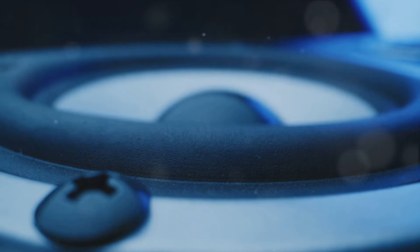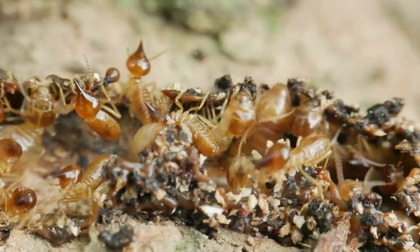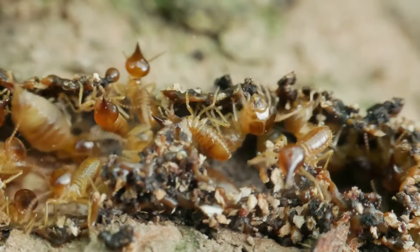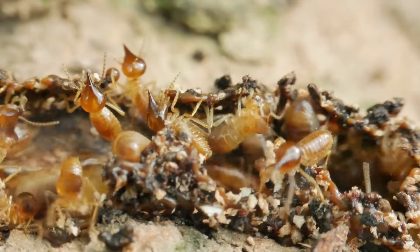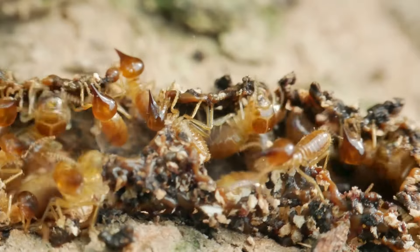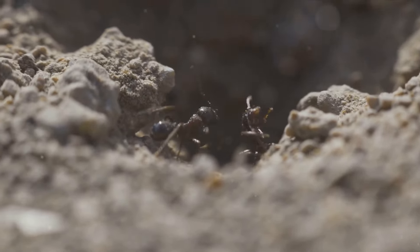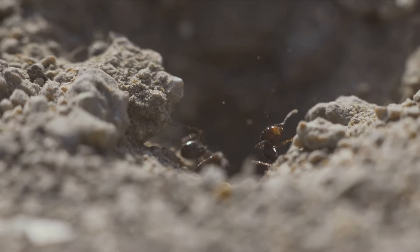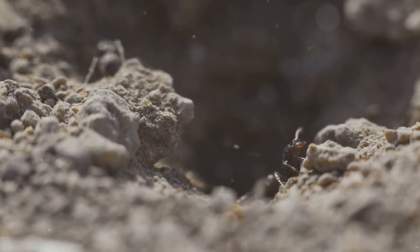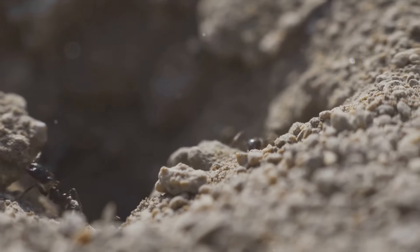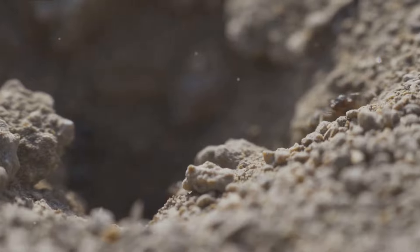Let's take the example of a termite colony. Each termite doesn't have a blueprint of the complex structure they need to build, yet they all work in unison, building intricate mazes and chambers. Sheldrake's theory of morphic resonance suggests that these termites are able to build such complex structures because they carry a collective memory from all previous termite colonies. It's like they have a shared database they can tap into, which guides their actions.